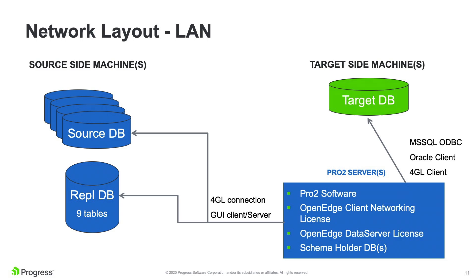The Pro2 software lives on another machine, connects to both the source database and the REPL database, finds out what changed, fetches the record from the source database, and pushes that record through the data server license to the target database — assuming you're replicating to SQL Server or Oracle. On the Pro2 server, we maintain a small schema holder database representing the target database schema.